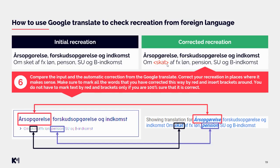Before using the text from Google Translate, compare the input and the automatic correction word by word to find out if they match the input. Then correct your recreation where it makes sense. Make sure to mark all corrected words in red with brackets. You do not have to mark text in red and brackets only if you are 100% sure it is correct. In the end, you may end up with only one word marked, as all other words were confirmed correct after comparing them to the input.